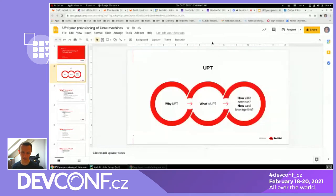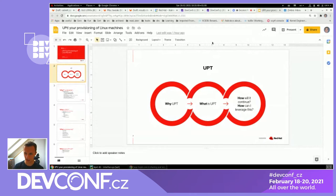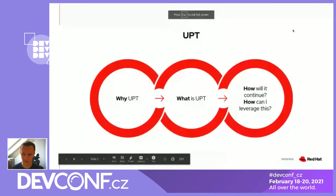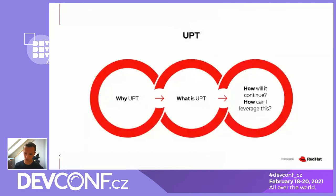The idea is to talk about why I've made Upt, why I've written it, what is its purpose, what it actually is, and the main part — how can you leverage this for yourself, your organization, your project? The idea behind the presentation is that it's mostly Red Haters in the room, and this is a way to share what I've been working on and hopefully show how someone else can use it and benefit from it.